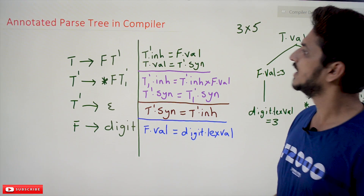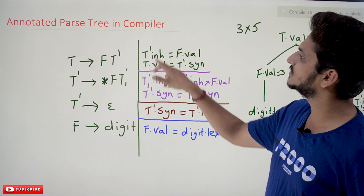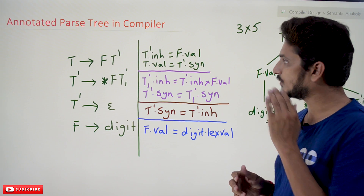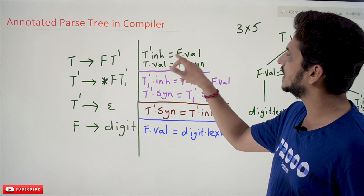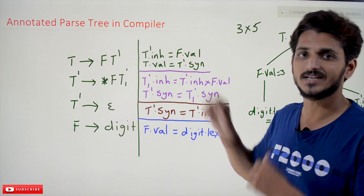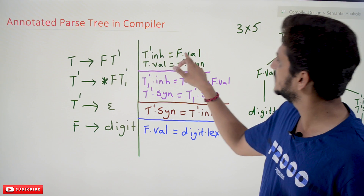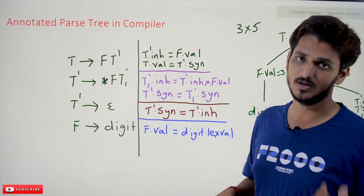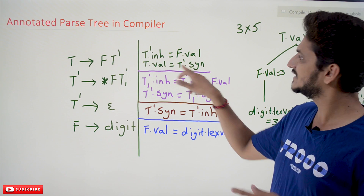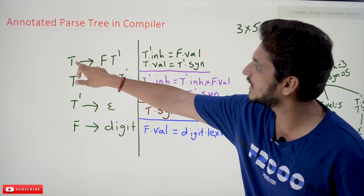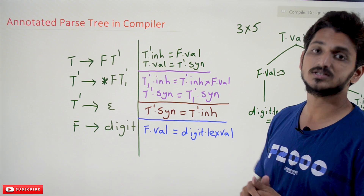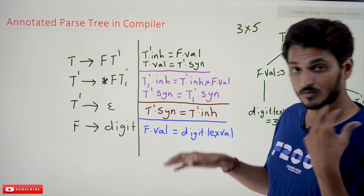For this CFG, some semantic conditions are given. For the first production T → F T', two conditions are given. T' dot inherited = F dot value — since T' is using F dot value, which is its sibling's value, this is an inherited attribute. T dot value = T' dot syn — this is a synthesized attribute because T dot value's parent takes the value from its child.